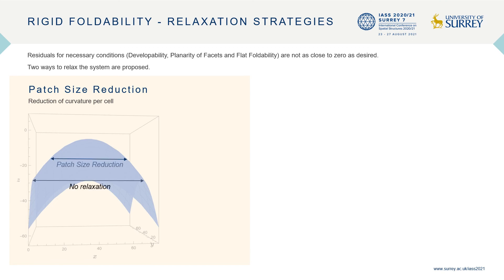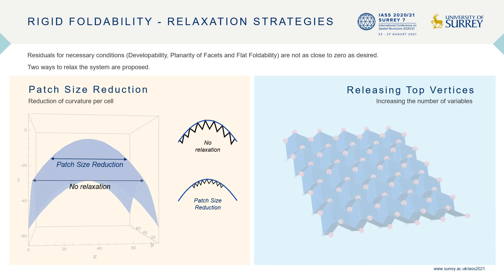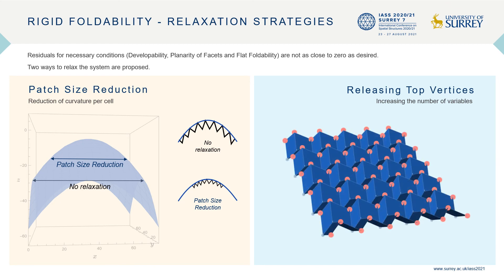By choosing a smaller patch, the system relatively comes closer to a flat surface and therefore is easier to solve. The second strategy is to release some of the top vertices that were previously constrained to lie on the target surface in order to reduce the indeterminacy. The yellow vertices shown here are freed.